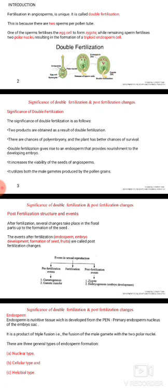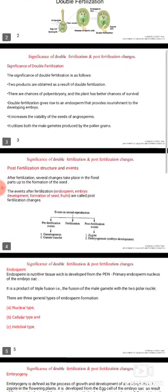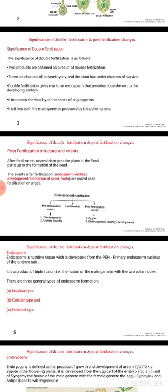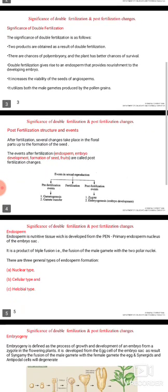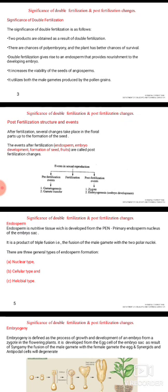The significance of double fertilization is as follows. Two products are obtained: formation of a zygote from the egg, and endosperm. There are chances of polyembryony, giving the plants better chances of survival, and double fertilization gives rise to an endosperm that provides nourishment to the developing embryo.